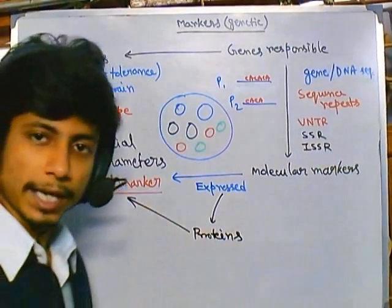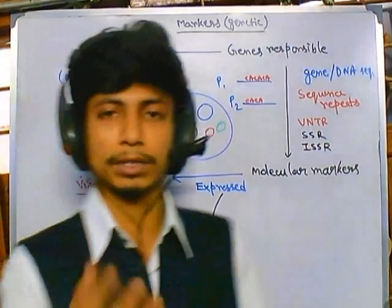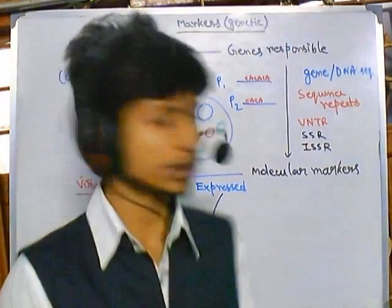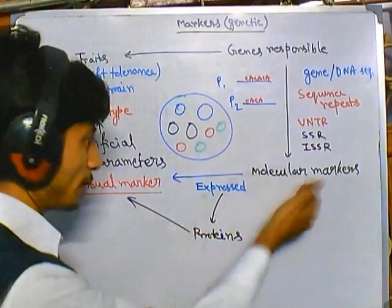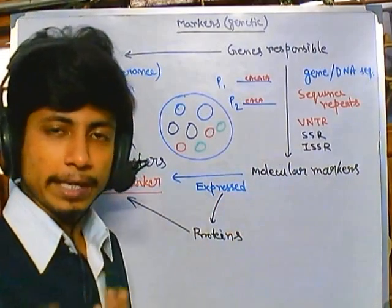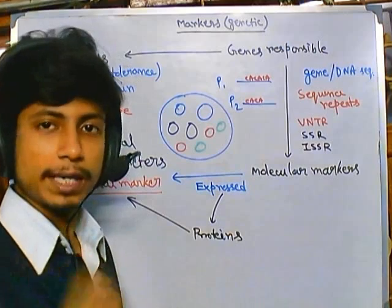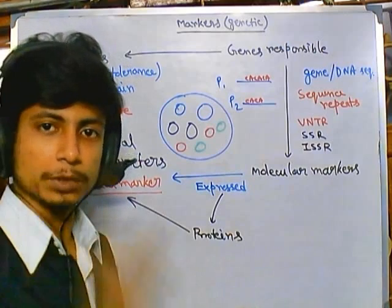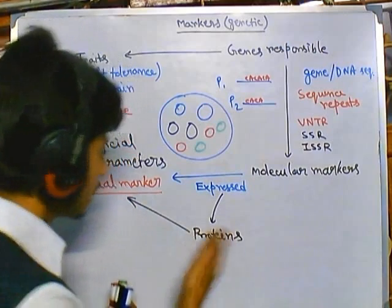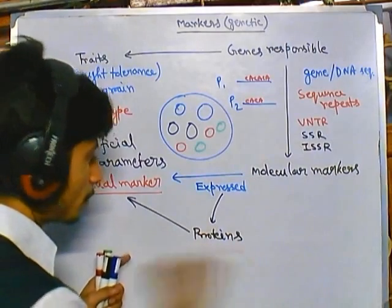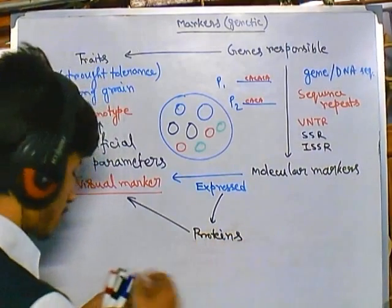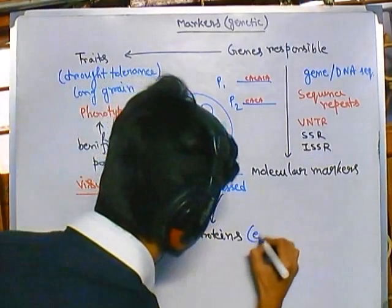These proteins in turn give us visual expressions. For example, talking about grain — long grain or short grain — after the expression of particular markers, proteins and enzymes are made. Those enzymes are required for deposition of food particles to produce long grains. These are the expressions.